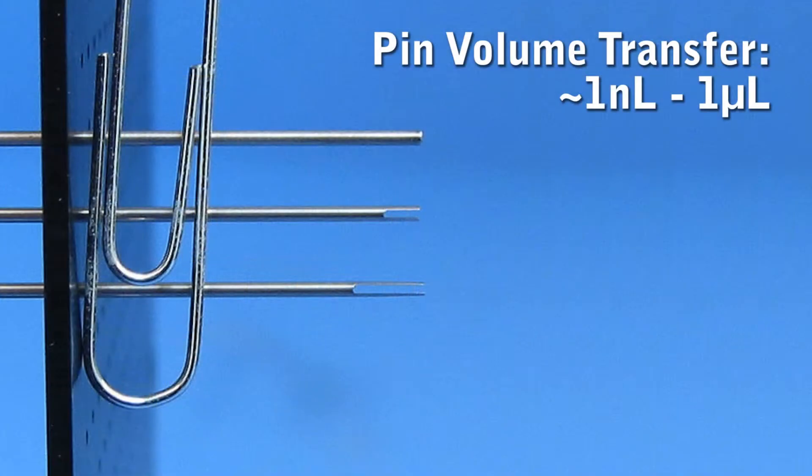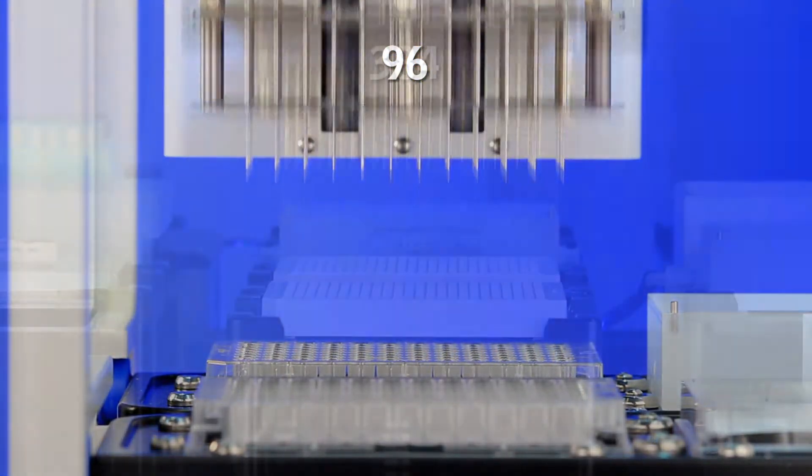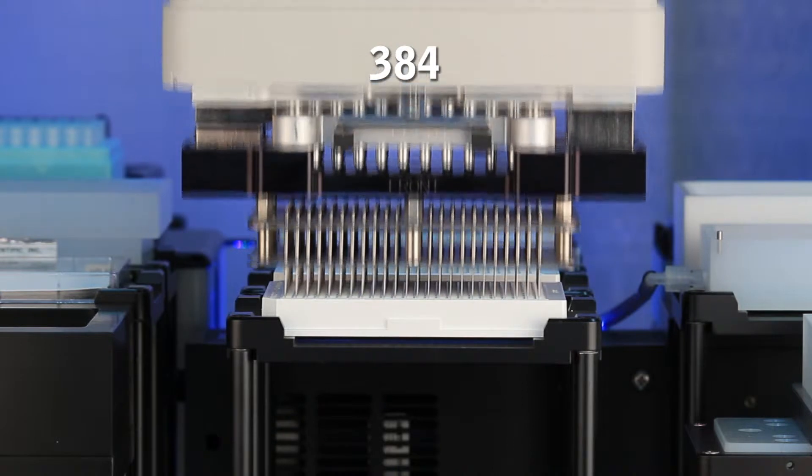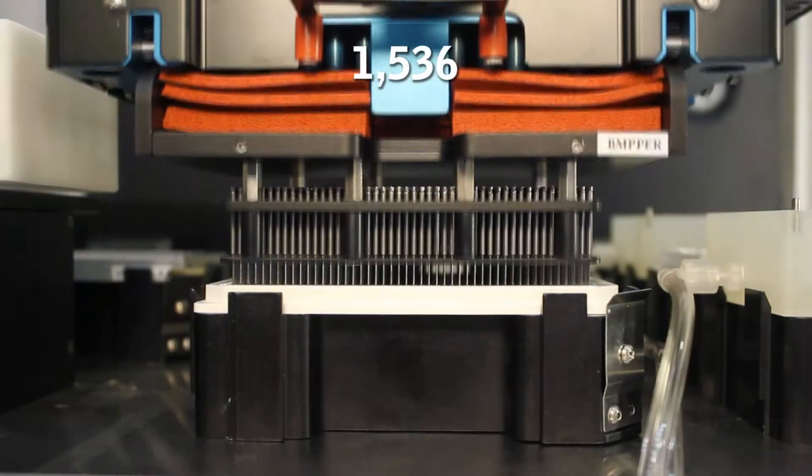VMP makes pins with various diameters and slots to accommodate transfers between 1 nanoliter and 1 microliter. Our pin tools come in 96, 384, and 1536 formats.